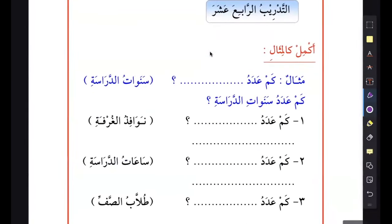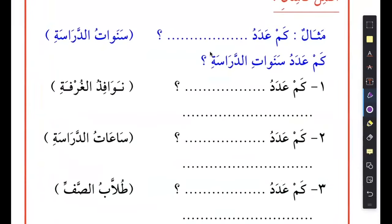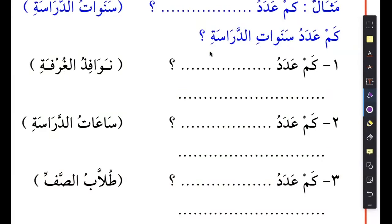Next we have the 14th exercise. It also says complete like the example. This one is also very easy. When we talked about kam, we mentioned that kam has a special construction that you follow. We use a singular fatah state noun - so kam kitaban means how many books. How do you say how many pens? Kam qalaman. How many houses? Kam baytan. We don't say buyut - we don't use a plural, we say singular.